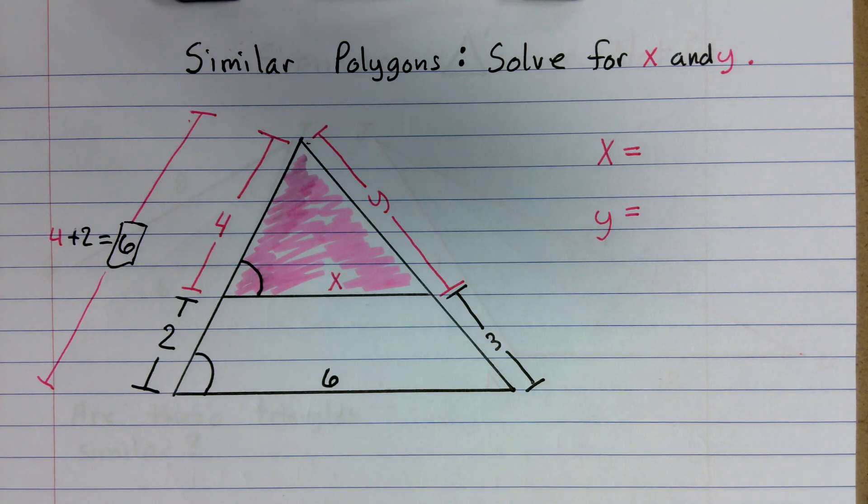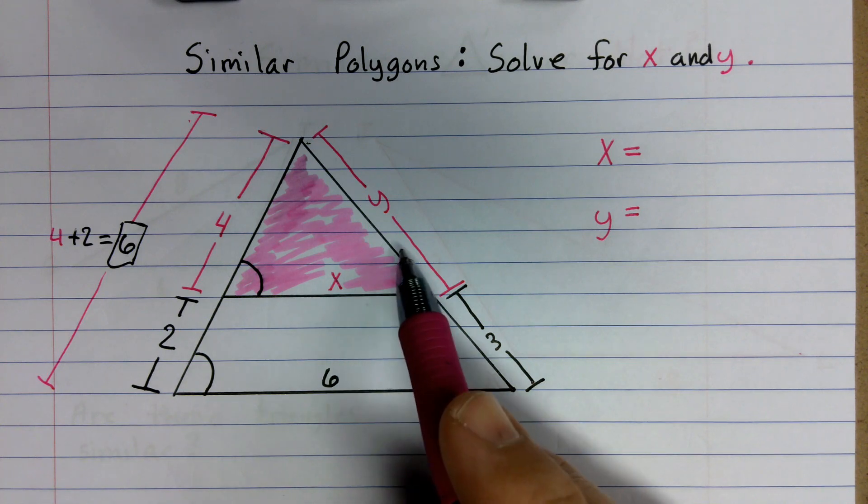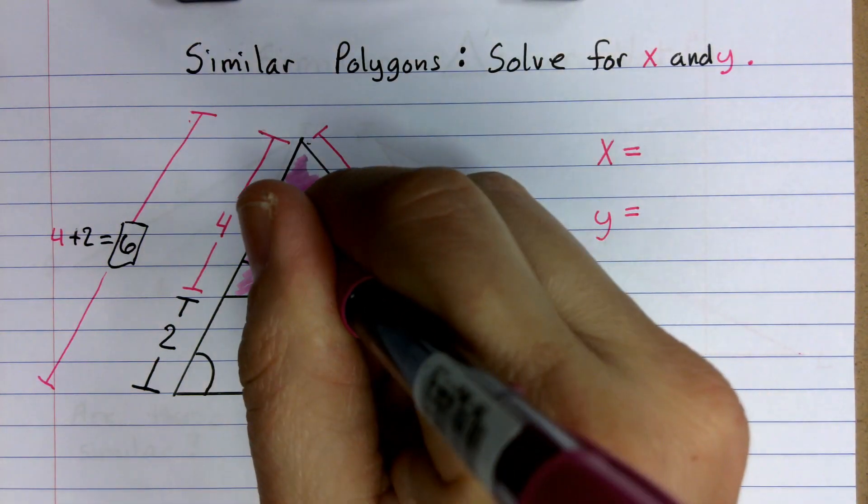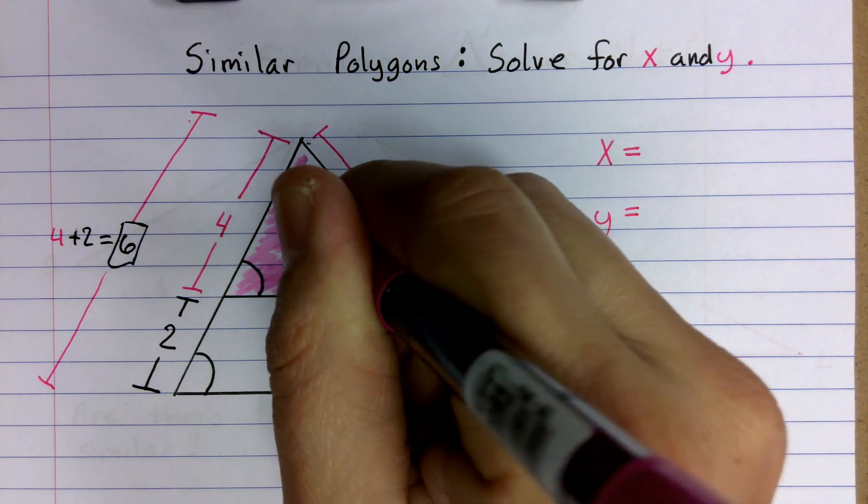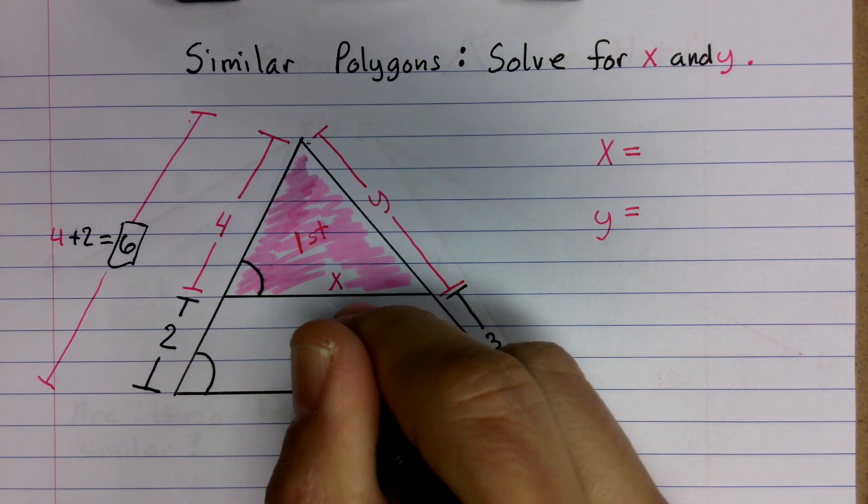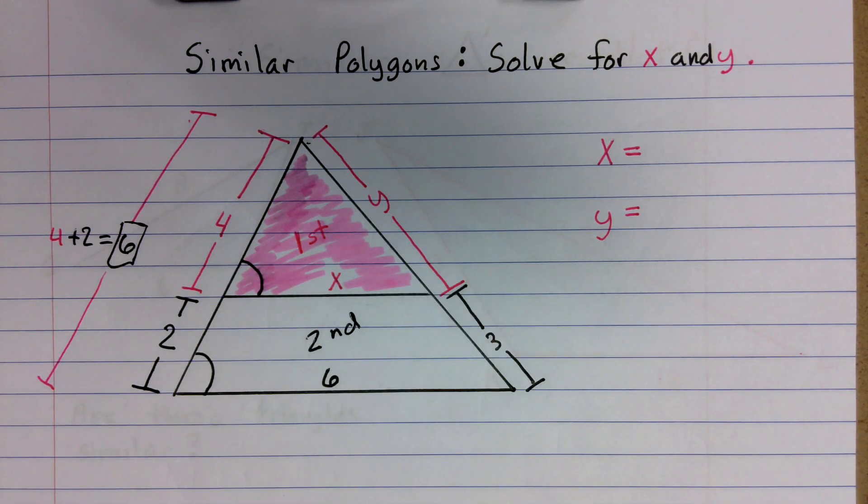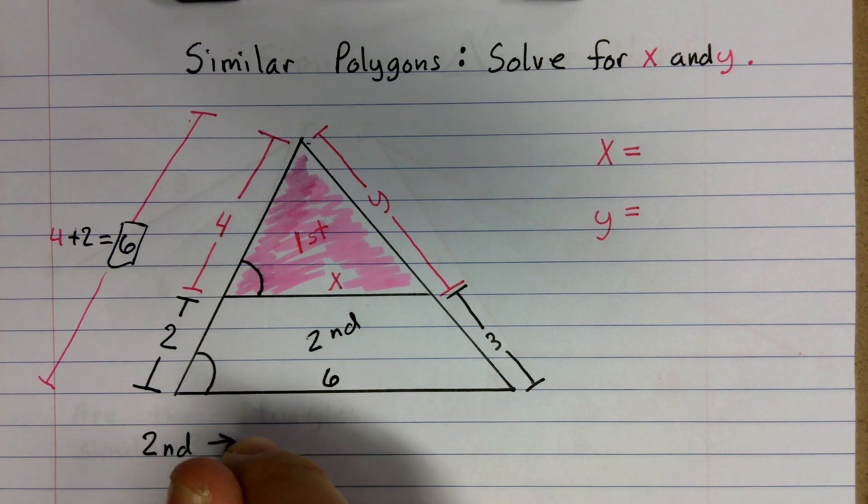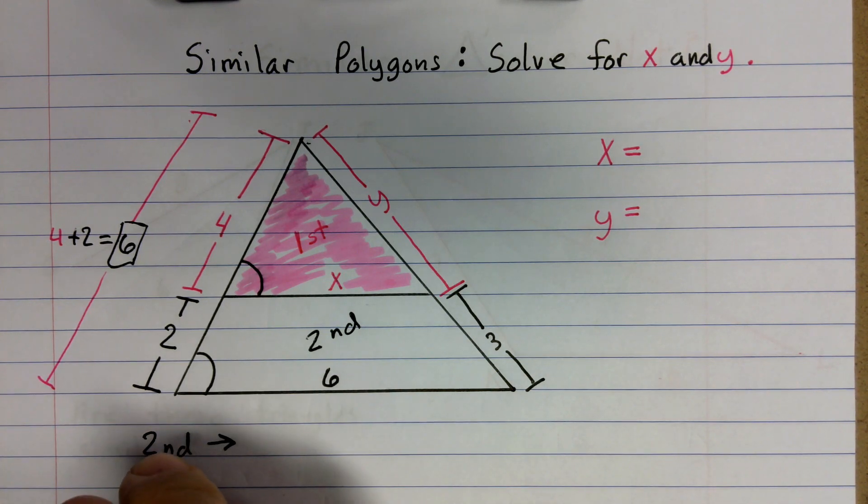So let's go ahead and set up our first proportion. I think we are going to solve for y first, and then we'll come back and we'll solve for x. Now, as always, before I get too far, I'm going to go ahead and label this little triangle my first shape, and I'm going to label the bigger triangle my second shape. And when I set up my proportion to solve this, I'm going to put everything from my second shape in the numerator, and everything from my first shape in the denominator.